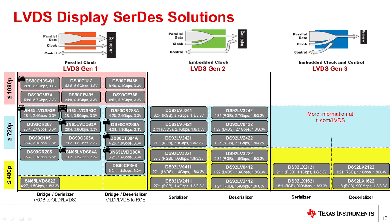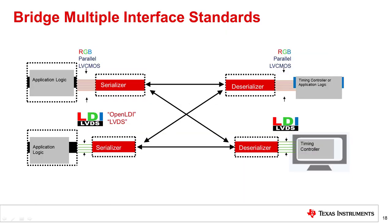Here's an overview of our Gen 1, Gen 2, and Gen 3 SERDES portfolio where you can select a chipset based on desired resolution. More options are available at ti.com/lvds. This slide highlights the different input and output interfaces to fit your application. For example, if your display only accepts an LVDS input but your processor only has a parallel RGB output, we offer solutions where you can bridge the parallel RGB output to an LVDS input for your display.